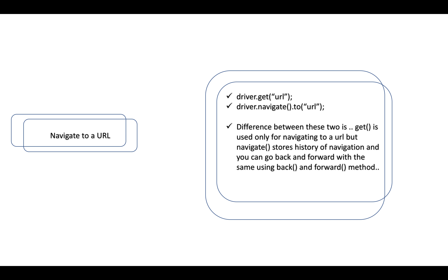First question: how to navigate to a URL. There are two ways — driver.get() with the URL, and driver.navigate().to() with the URL. The difference is that get() is used for navigating to a URL, but navigate() stores the history of navigation, meaning you can go back or go forward.